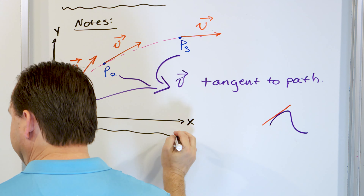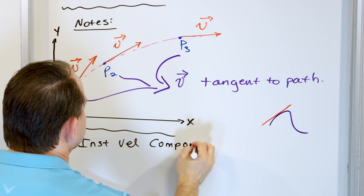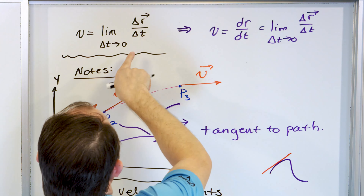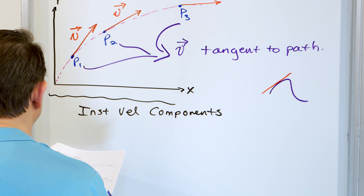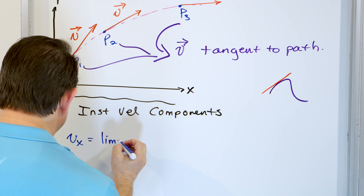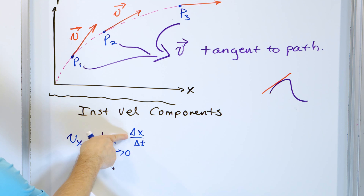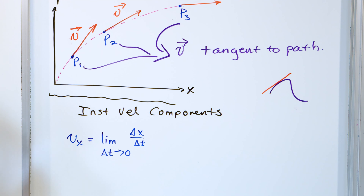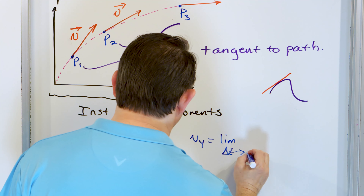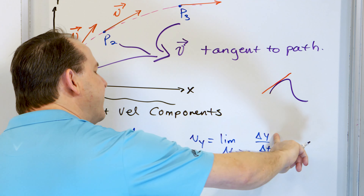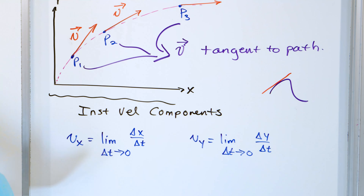We can also talk about instantaneous velocity in components. This equation — the instantaneous velocity is the limit of delta r over delta t — is the vector equation, but we can think of it in terms of components. We can say the x component of the instantaneous velocity is the limit as delta t goes to zero of delta x divided by delta t. All we do is see how far it went in the x direction divided by the time, and let that shrink down to get the instantaneous velocity in the x direction. And vy: we can say the limit as delta t approaches zero of delta y divided by delta t.